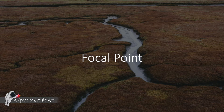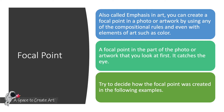You saw how a focal point was created through framing. A focal point is also called emphasis in art. You can create a focal point in a photo or artwork by using any of the compositional rules, or even with elements of art such as color. The focal point or emphasis is the first thing you look at when you view a piece of art. Try to decide how the focal point was created in the following examples.